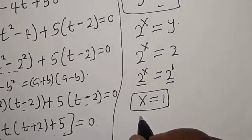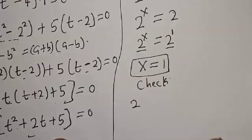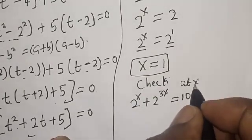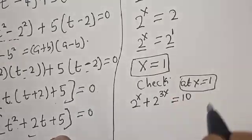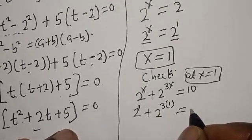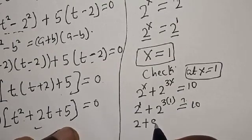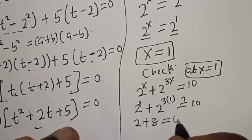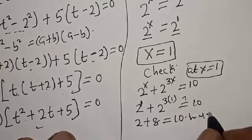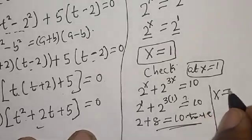We can check to confirm. We have the equation 2 raised to power x plus 2 raised to power 3x equals 10, at x equals 1. So 2 raised to power 1 plus 2 raised to power 3 times 1 equals 10. Let's see: 2 raised to power 1 is 2, plus 2 raised to power 3 is 8, and 8 plus 2 equals 10. So the real value of x is equal to 1.